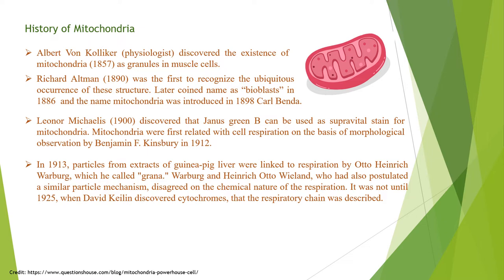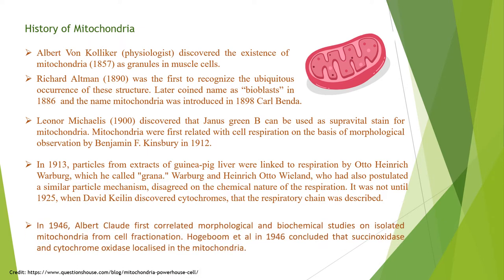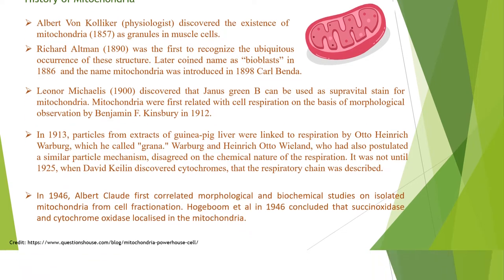It was not until 1925 when David Keilin discovered cytochromes that the respiratory chain was described. In 1946, Albert Claude first correlated morphological and biochemical studies on isolated mitochondria from cell fractionation. Hawke-Wall in 1946 concluded that succino oxidase and cytochrome oxidase were localized in the mitochondria. Over time, the fractionation method was further developed, improving the quality of the mitochondria isolated, and other elements of cell respiration were determined to occur in the mitochondria.